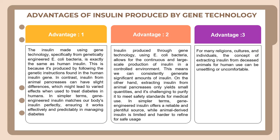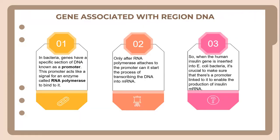Thirdly, for many religions, cultures, and individuals, the concept of extracting insulin from diseased animals for human use can be unsettling or uncomfortable. Regarding gene-associated regions of DNA in bacteria, genes have specific sections of DNA known as promoters. Promoters act like a signal for the enzyme RNA polymerase to bind to. Only after RNA polymerase attaches to the promoter does it start the process of transcribing the DNA into mRNA. When the human insulin gene is inserted into E. coli bacteria, it is crucial to ensure that a promoter is linked to it to enable production of insulin mRNA.